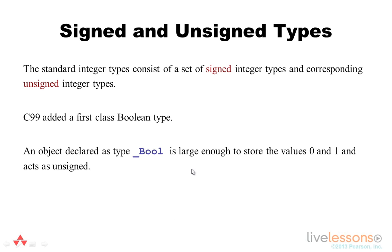The standard integer types consist of a set of signed integer types and corresponding unsigned integer types. The C99 standard also introduced a first-class Boolean type. An object declared as type _Bool is large enough to store the values 0 and 1 and acts as an unsigned value. This is an exception because there is no corresponding signed Boolean type.